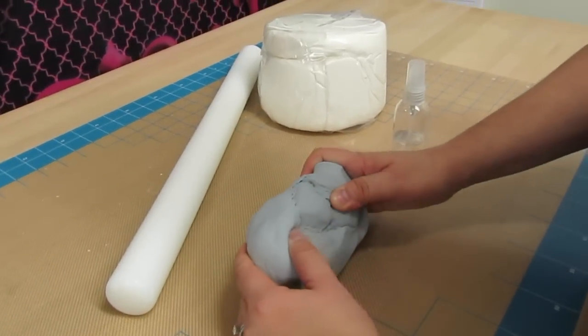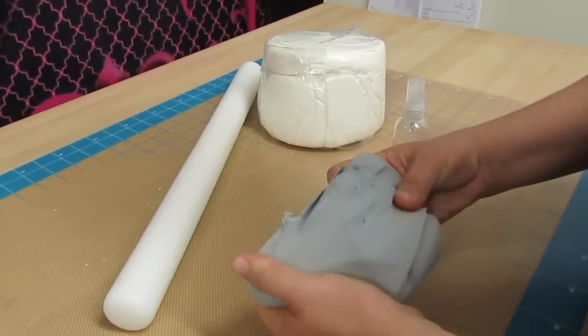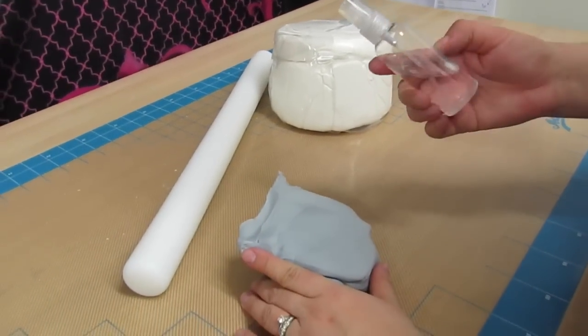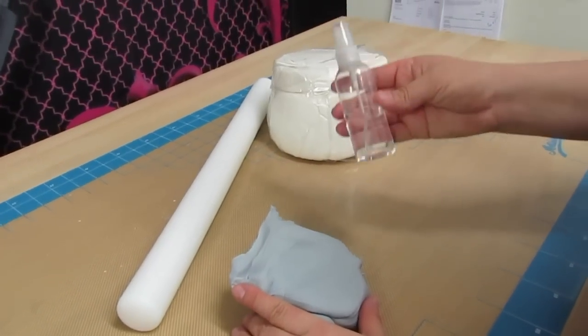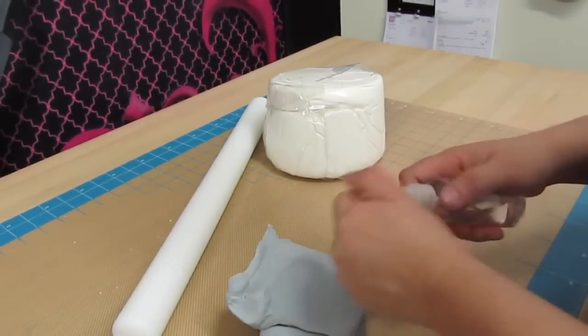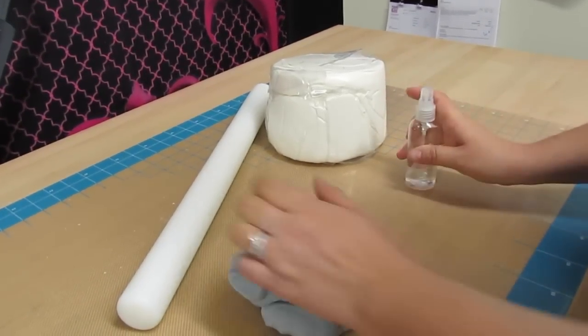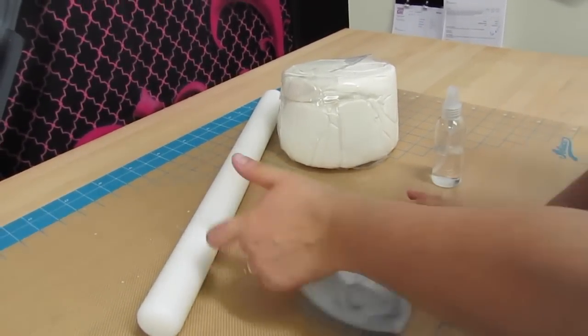So I want to basically tell you guys that whenever fondant starts drying out, it's because it's losing moisture. So one thing that I do to help solve this problem is when I'm rolling out my fondant, I always have a little bottle of water, and all I have to do is just spritz my fondant with a little bit of water and knead it.